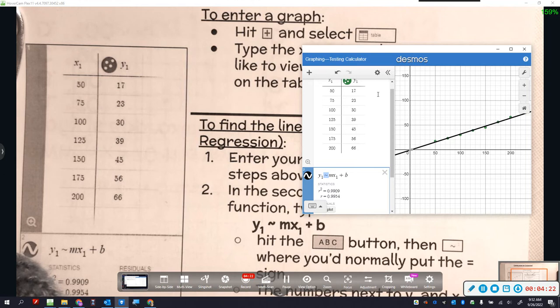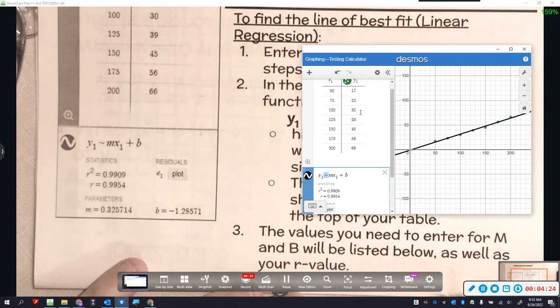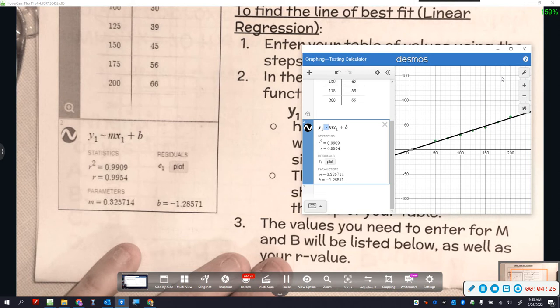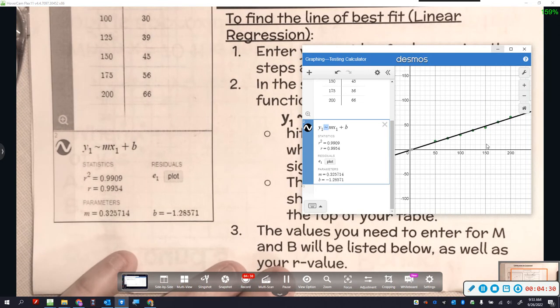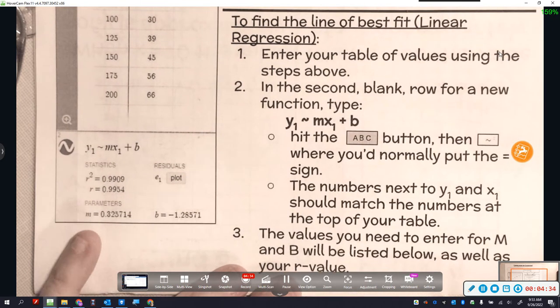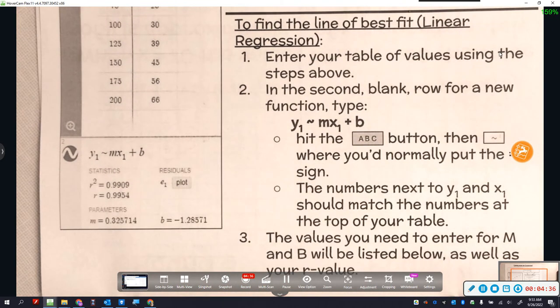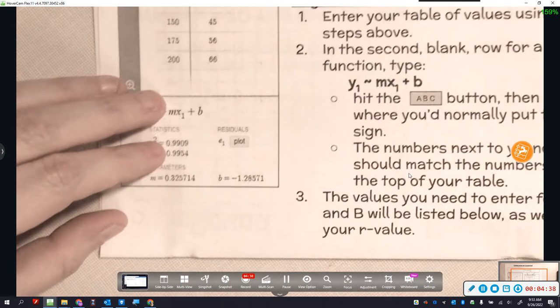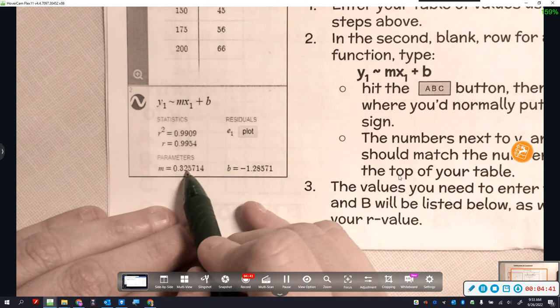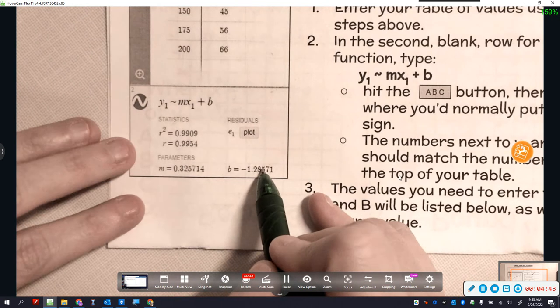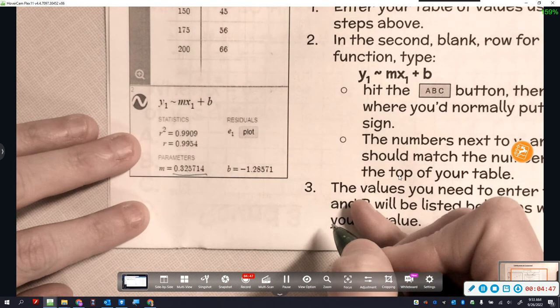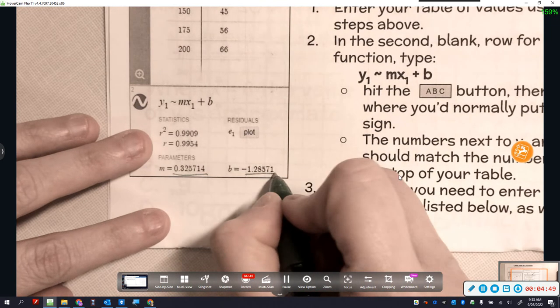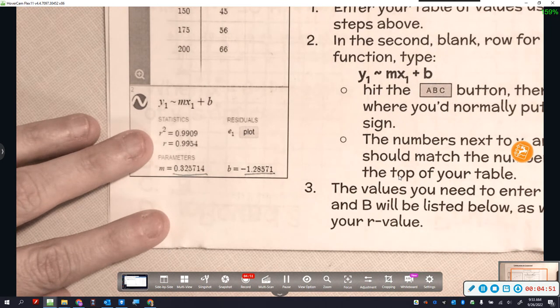Now when you do that, you're going to see this information. You can see it graphing the points. Do you see how it goes through those lines pretty well? So what does this tell me? It gives me a bunch of really useful information. The first thing it tells me is my slope and my y-intercept. So I could use this to write an equation. It says M is 0.325714 and B is negative 1.28571.